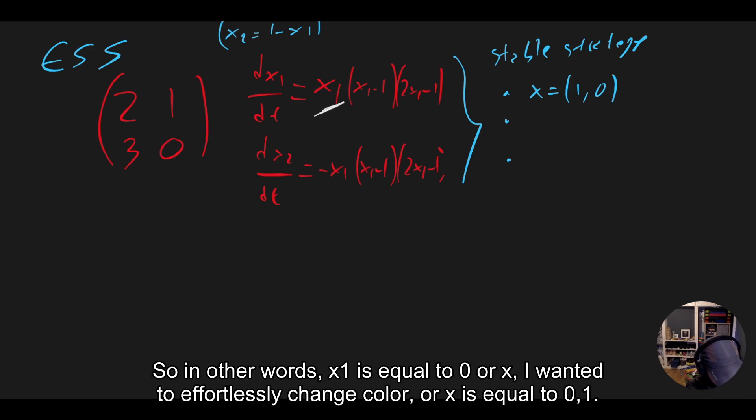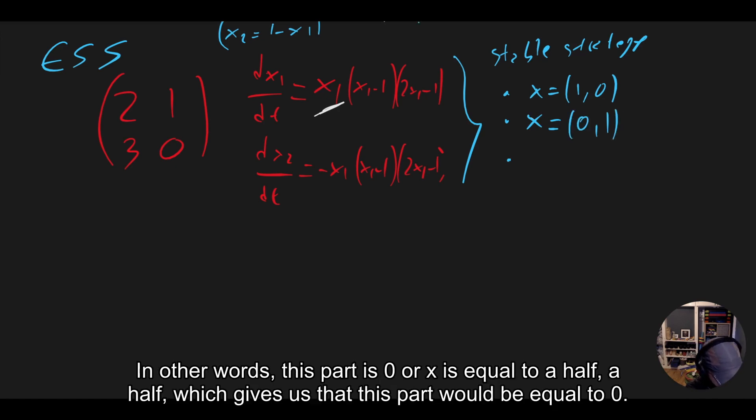So in other words, x1 equals 0, or x equals (0, 1) - in other words, this part is 0 - or x equals (1/2, 1/2), which gives us that this part would be equal to 0.